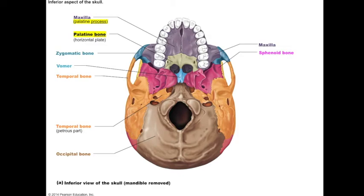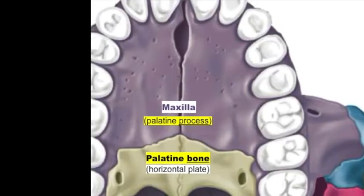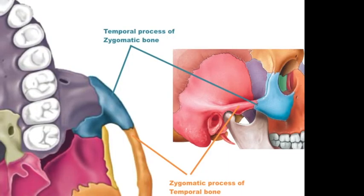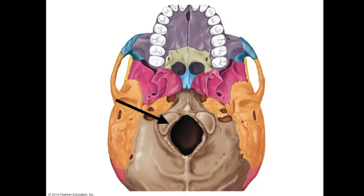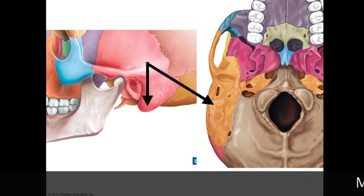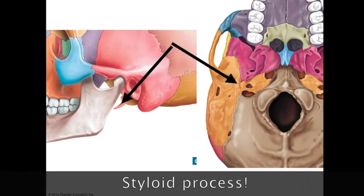Many of the structures or features of the skull will be comprised of two or more cranial and facial bones. This is where you want to start paying attention to names. For instance, the roof of your mouth, the hard palate, is made up of two bones: the maxilla and the palatine bone. The region of the maxilla that connects to the palatine bone is the palatine process, which connects to the horizontal plate, the inferior region of the palatine bone. Another example is the zygomatic arch, made up of the zygomatic bone and your temporal bone. The zygomatic process of the temporal bone connects to the temporal process of the zygomatic bone to make up this structure.